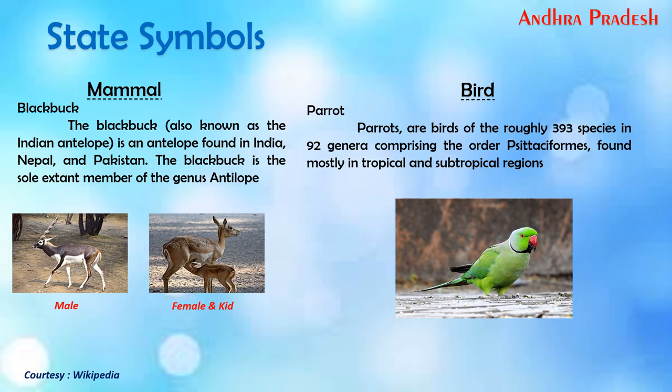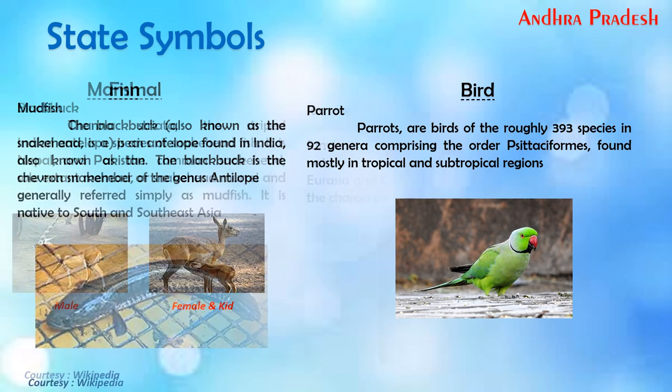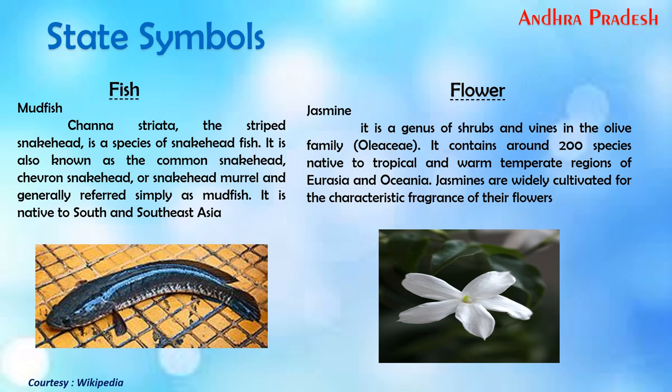The state mammal is the Blackbuck, an antelope found in India, Nepal, and Pakistan. The state bird is the Parrot — there are roughly 393 species in 92 genera comprising the order Psittaciformes, found mostly in tropical and subtropical regions. The state fish is the Mudfish, a snakehead species — Channa striata. The state flower is Jasmine.